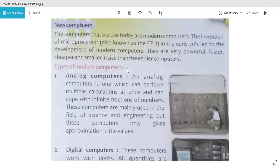The invention of the microprocessor. What happened in the modern age? Microprocessor has been developed. You know the name CPU, also known as the central processing unit. They are very powerful, faster, cheaper, less expensive, in your budget, and smaller in size.